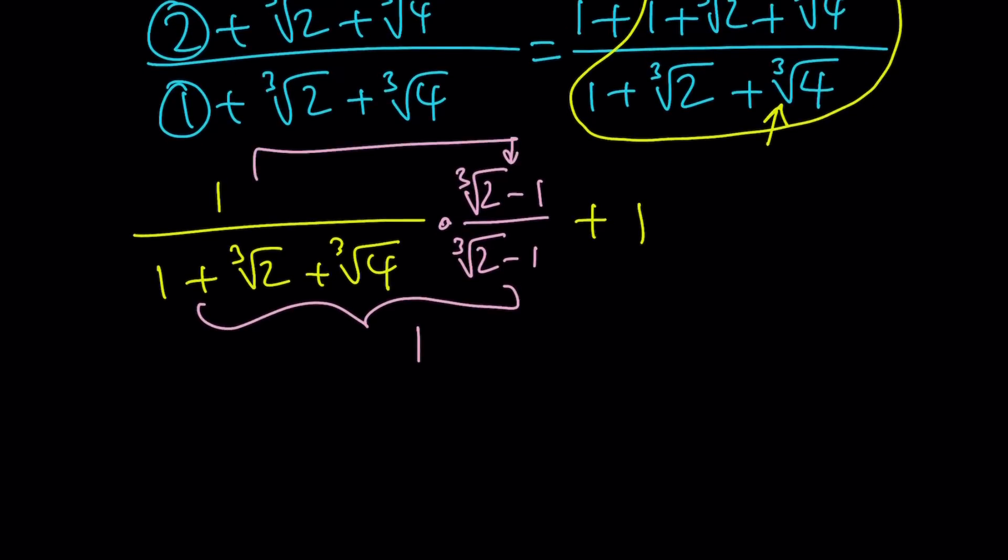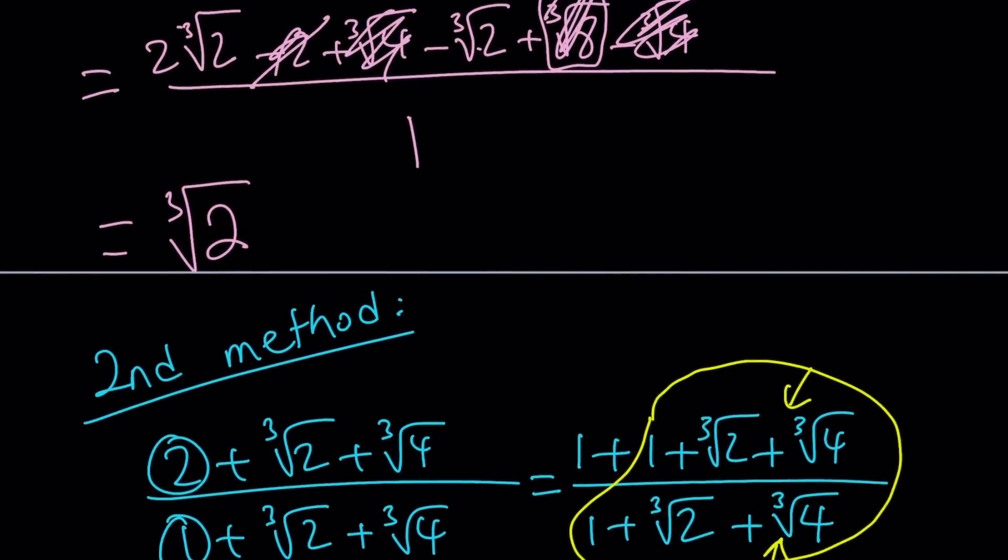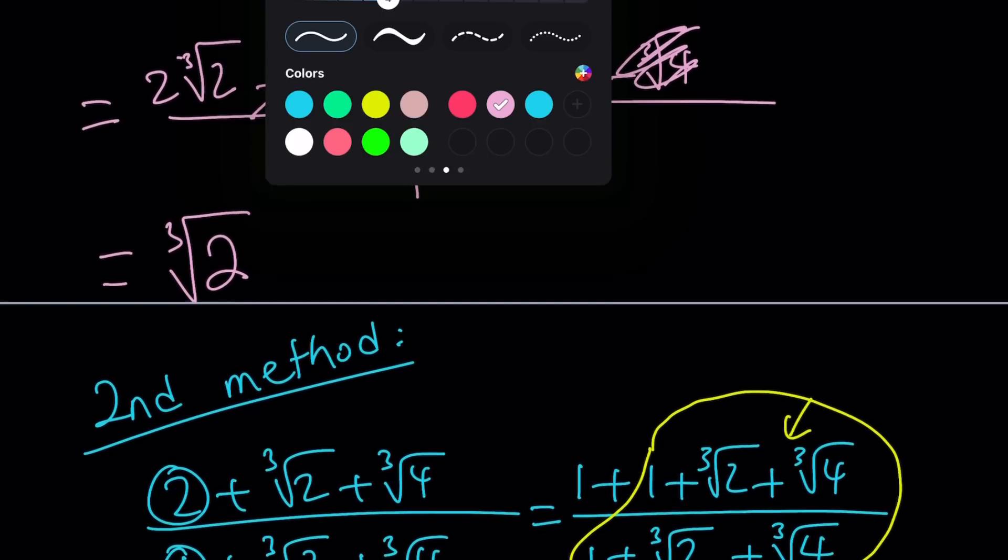That was great. And from here, we get 1 times something, which is cube root of 2 minus 1, divided by 1 is the same thing, plus 1. Negative 1, positive 1, cancel out. And we end up with cube root of 2 as the final answer, which is pretty much the same thing, the same result with first method.